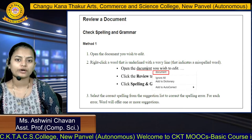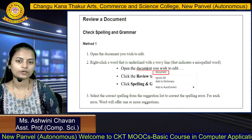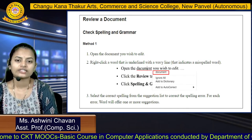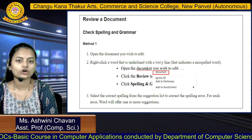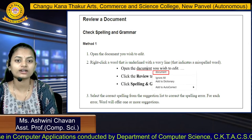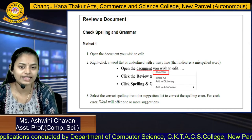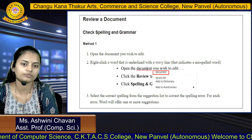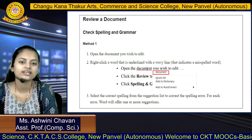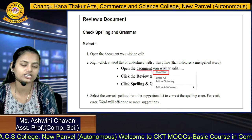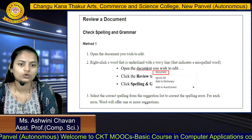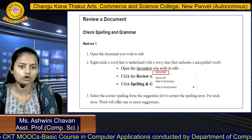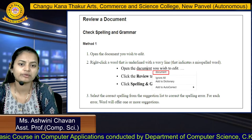Next, how to review a document — if there are spelling or grammar mistakes, we need to review it. Method 1: open the document and right-click a word underlined with a wavy line. For example, a misspelling like 'd-a-c-u-m-e-n-t' will show a suggestion such as 'document'. Click the Review tab, then perform a Spelling and Grammar check to find errors.